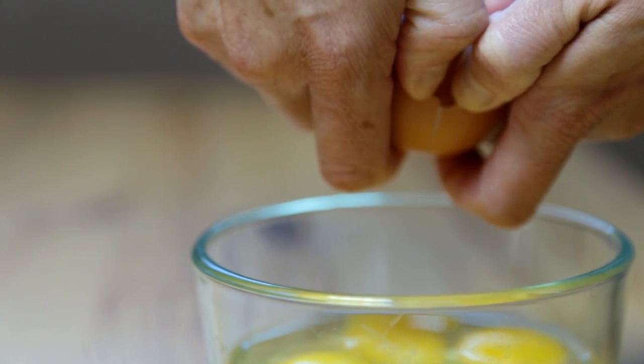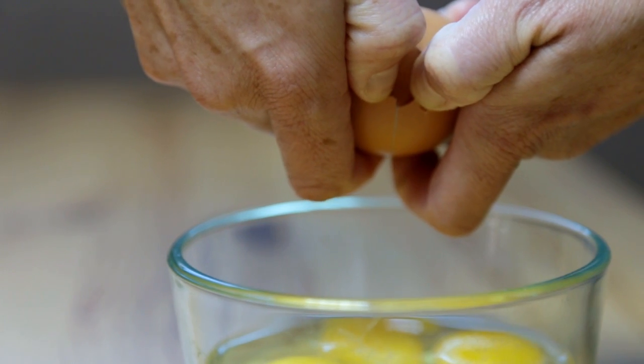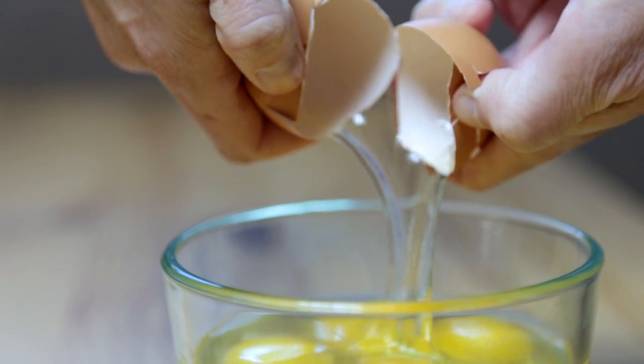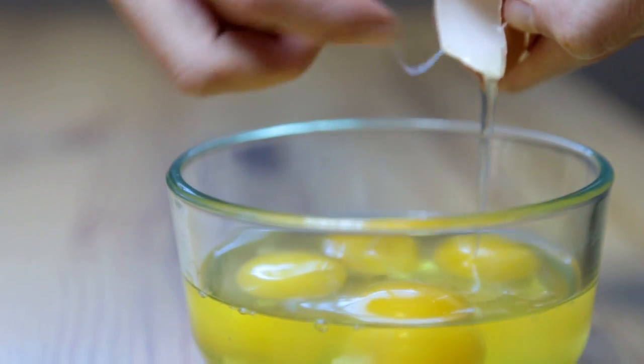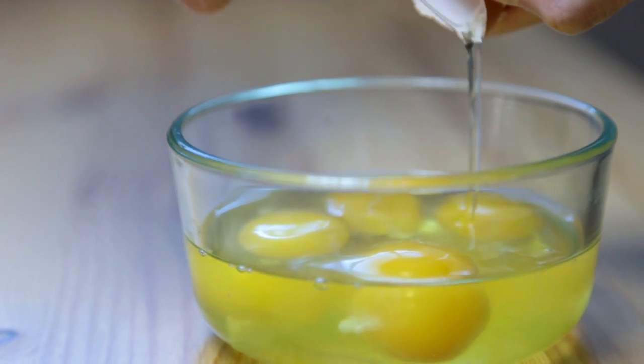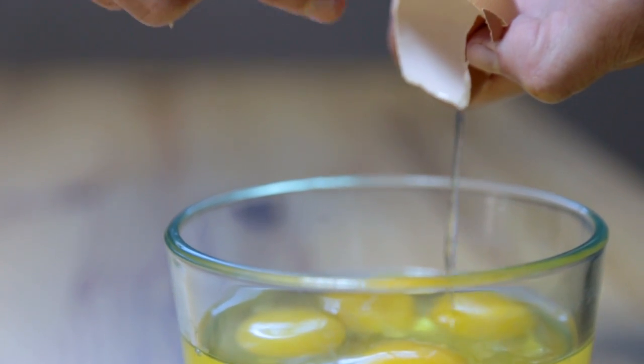Separate the two halves of the shell with your thumbs, and in the bowl it goes. Use your finger, get out any extra goodness, and that's it.